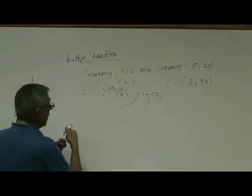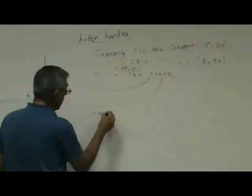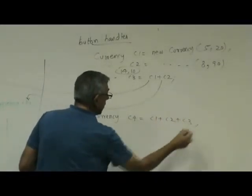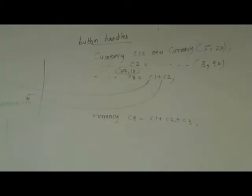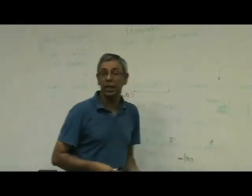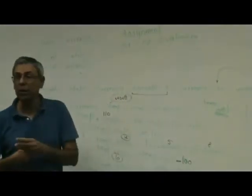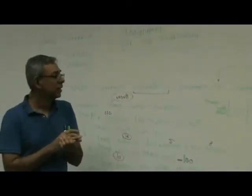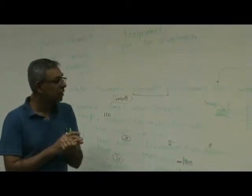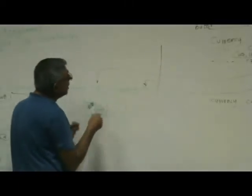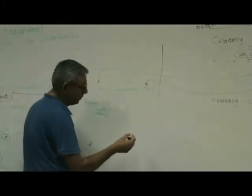So that brings us to another question. What if somebody tried to do in the next line, currency C4 equal to C1 plus C2 plus C3? What will happen? Okay. Do we have to overload one more operator plus so that instead of taking two parameters, it takes three parameters now? Or the same code will work? We have to store it in C4 equal to C1 plus C2 and then again add that because that will take only two parameters. Good. Yeah, that's the correct answer.